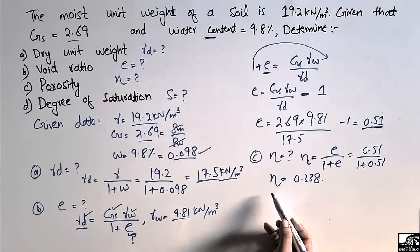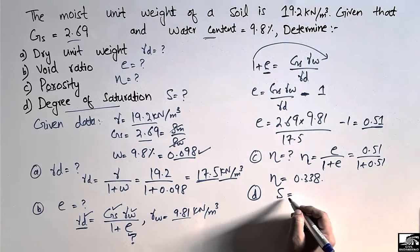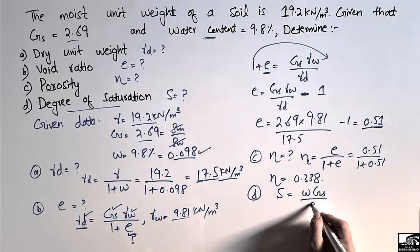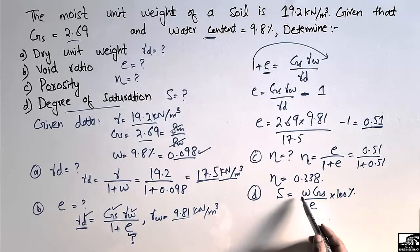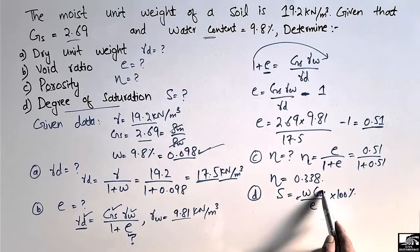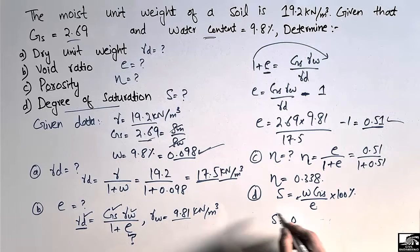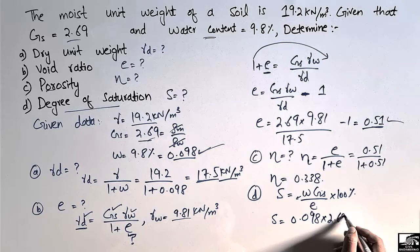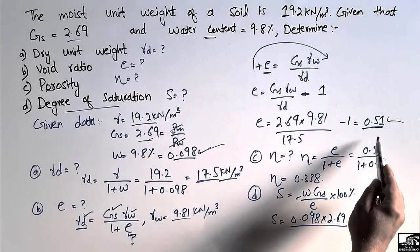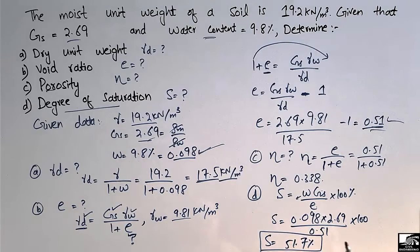Part D: find the degree of saturation S. The equation is: S = (w × Gs / e) × 100%. Here w = 0.098, Gs = 2.69, and e = 0.51. Substituting: S = (0.098 × 2.69 / 0.51) × 100% = 51.7%. The degree of saturation is always expressed as a percentage.